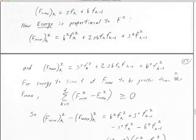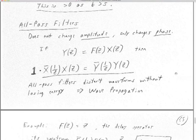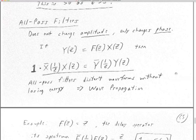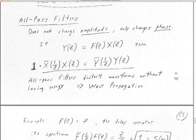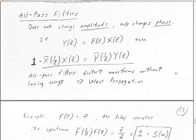A nice thing about minimum phase filters is that they are invertible. For filters in general, if they have any zeros inside the unit circle, when you invert that filter, each of those zeros inside the unit circle turns into a pole. A pole inside the unit circle results in an increasing, unbounded time series, and that's not useful.